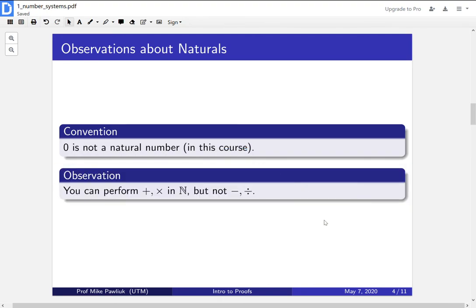One observation about the natural numbers is that you can perform addition and multiplication in the natural numbers. That's another way of saying you can add natural numbers and still get a natural. You can multiply naturals and still get a natural. But you can't do subtraction or division.